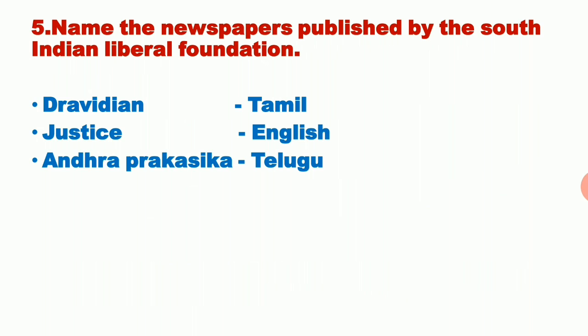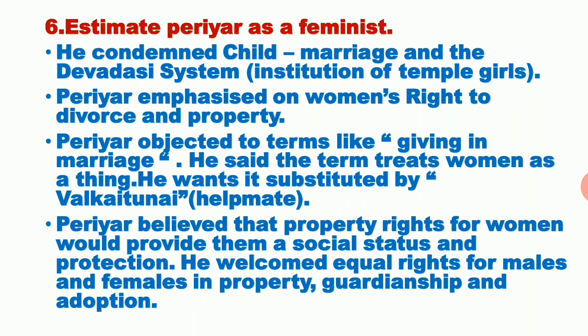Next question: name the newspapers published by the South Indian Liberal Foundation. The South Indian Liberal Foundation introduced three newspapers in three languages — Tamil, English, and Telugu. The first was Dravidian in Tamil, the second was Justice in English, and the third was Andhra Prakashika in Telugu. The South Indian Liberal Foundation's name was later changed to the Justice Party, which was taken from the English newspaper Justice.